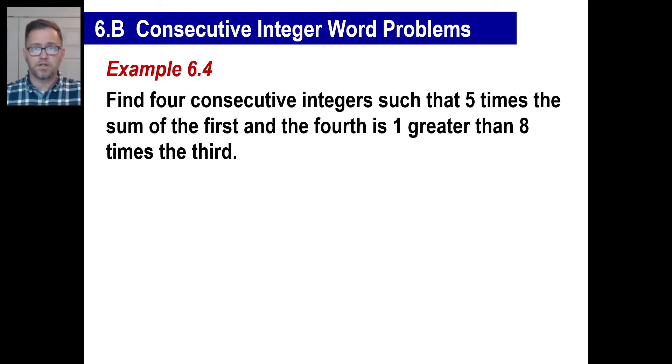So find 4 consecutive integers such that 5 times the sum of the person blah, blah, blah. Okay, whatever. So let's figure out first. We need 4 consecutive integers. Well, let's just make up something for the first one. We don't know what it is. We'll just call it x. In other words, this could be 12. It could be negative 20. It could be 8. Whatever it is.